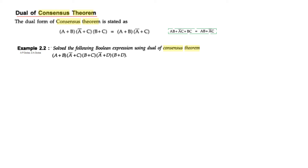The previous examples used sum-of-product terms. Now we have product-of-sum terms, and this is called the dual of consensus theorem. The same approach applies: just as we eliminated BC to get AB plus A-dash C, similarly for product-of-sum terms, AB becomes A plus B, A-dash C becomes A-dash plus C, and BC becomes B plus C. Here A and A-bar are complements, so we look at these two terms and eliminate B plus C. So B plus C is eliminated and this is the answer.